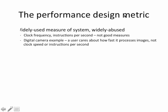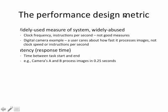The same thing applies to instructions per second, because when you have different instruction sets, you may have to use different numbers of instructions to implement the same software program. One concrete example is the digital camera. A user cares more about how fast it processes the image rather than the clock speed of the processor or the instructions per second.